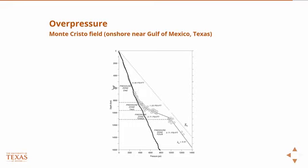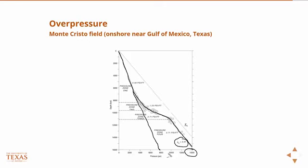Then you see a transition into an overpressure state, where the pressure as we go down increases such that the ratio reaches 0.91 — approaching the lithostatic state. The pressures at this depth have nearly doubled from the hydrostatic case: the reading is 14,000, whereas pure hydrostatic would be a little less than 8,000.